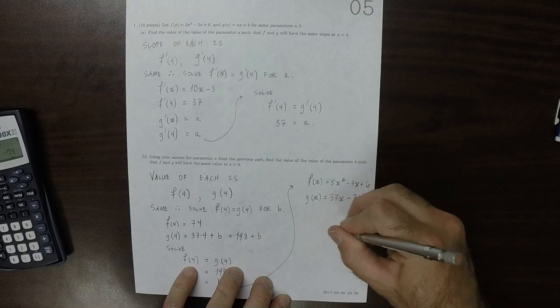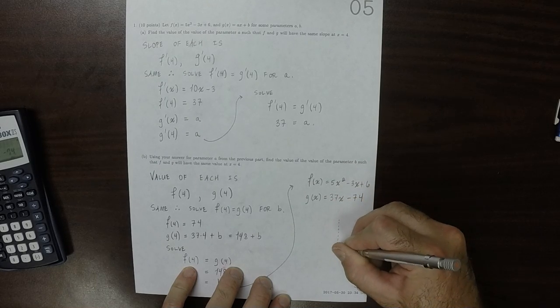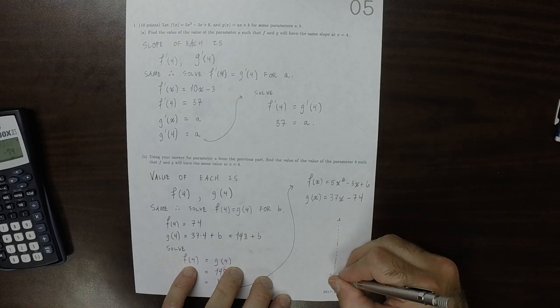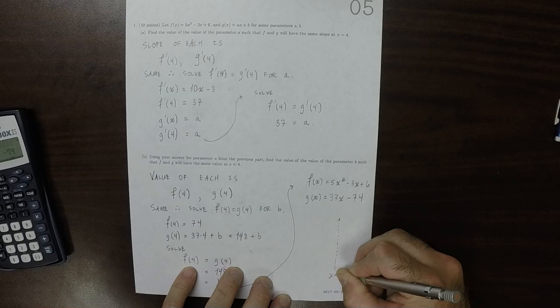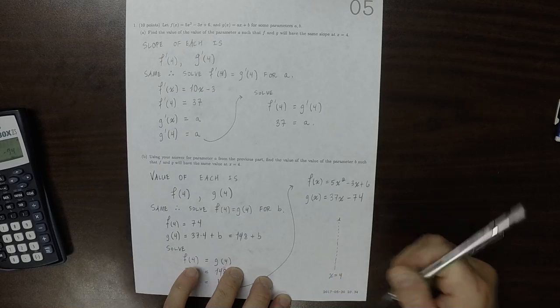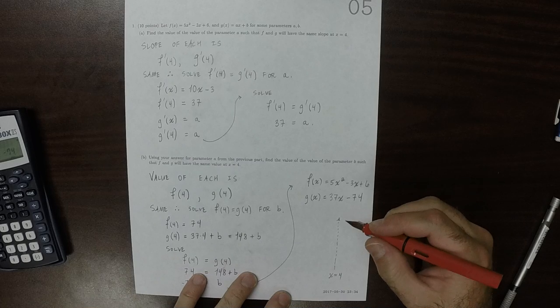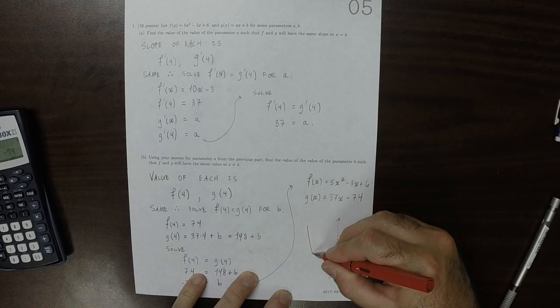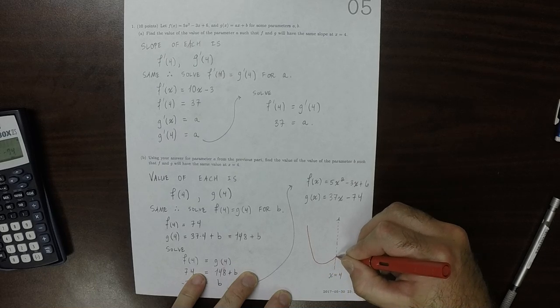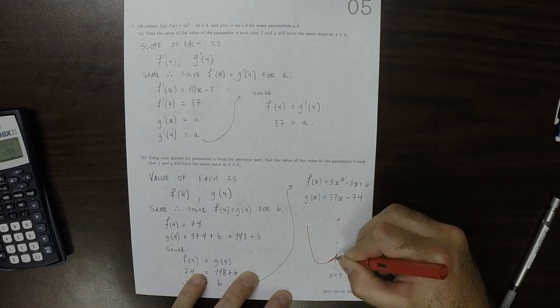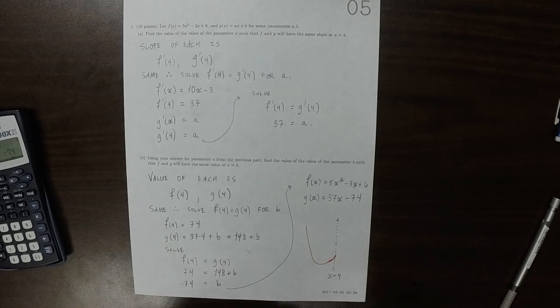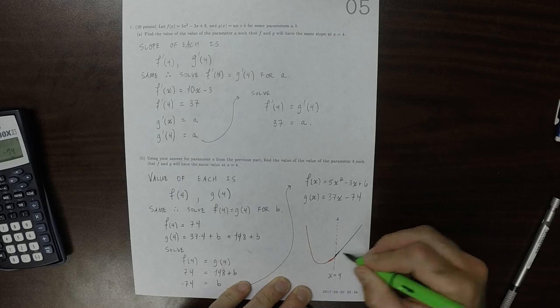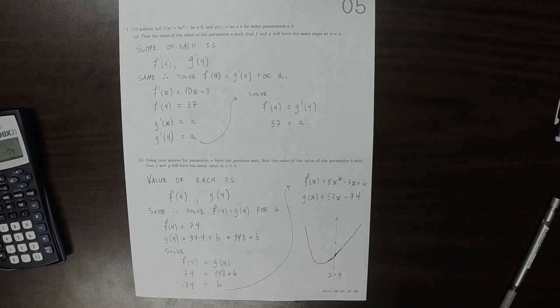Maybe I'll draw what they look like. So, at x is 4, the parabola might look something like this. And then the line can glue to it smoothly. Right there. Because they have the same slope and the same value.